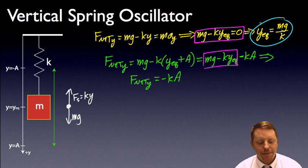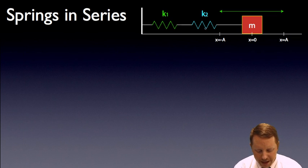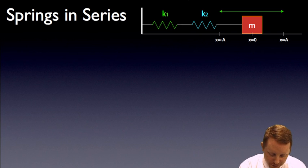Well then what happens if you have more than one spring in a system? What happens if we have two springs in series, k1 and k2? We bring our mass out to some equilibrium position and we let it oscillate back and forth between negative a and a. Alright, well in this case, let's take a look and see what we can find.